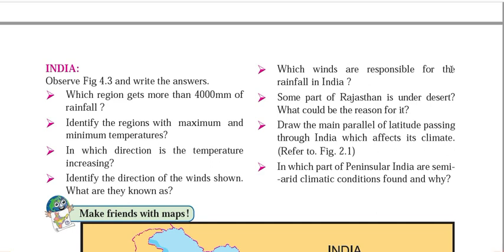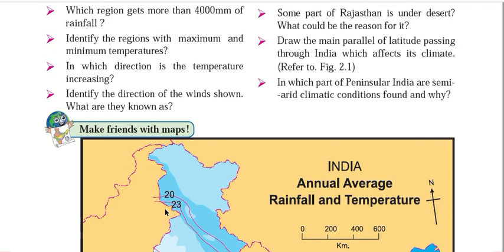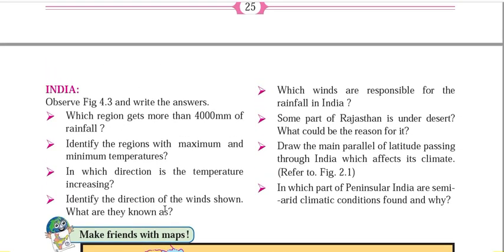Which winds are responsible for the rainfall in India? The same south-western monsoon winds. There are other winds also responsible for rainfall — winds coming from the Mediterranean Sea that give rainfall in the Punjab and some parts of the Haryana region in November and December months. That's why this rainfall is very beneficial for wheat crops. This Mediterranean disturbance brings rainfall in this region, but it is very small compared to the entire rainfall pattern in India.